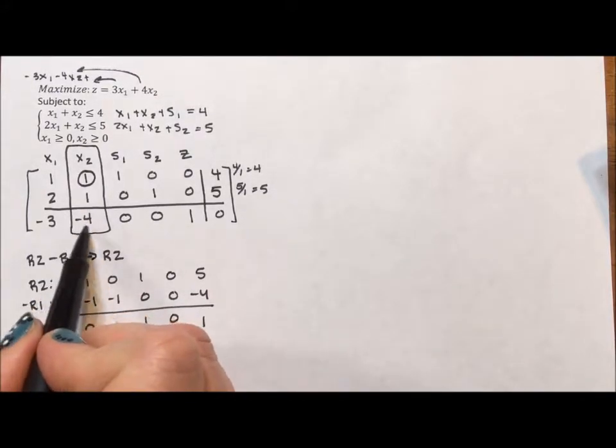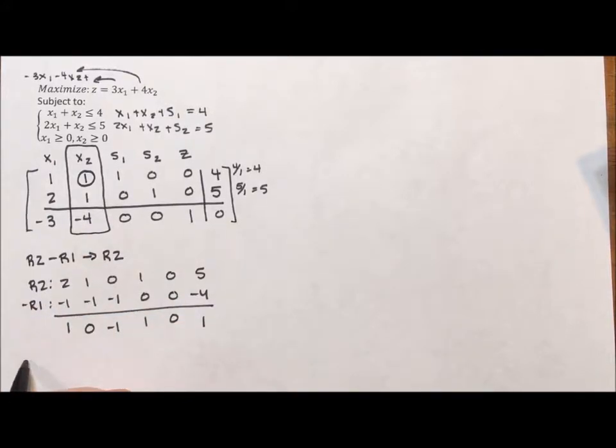Now to eliminate this 4, I'm going to do 4 times row 1 plus row 3 and replace row 3 with that. So 4 times row 1 is going to be 4, 4, 4, 0, 0, 16. And then row 3 is negative 3, negative 4, 0, 0, 1, 0. When we add down, we get 1, 0, 4, 0, 1, 16.